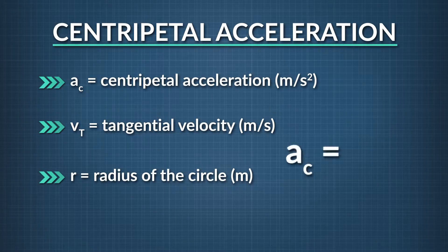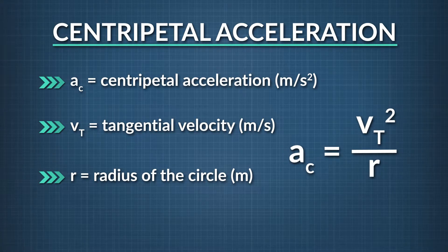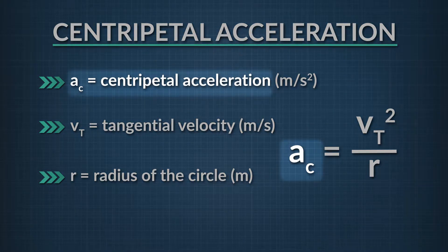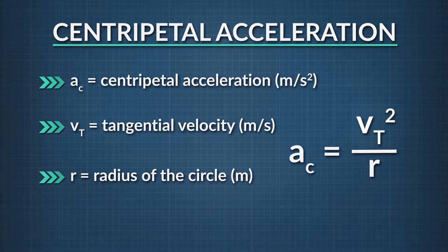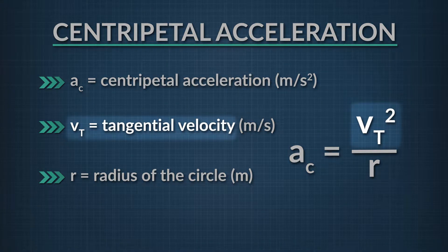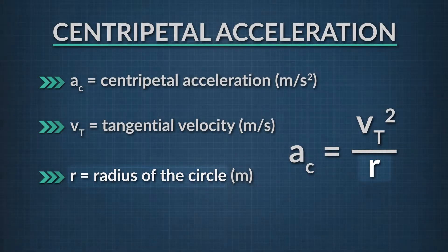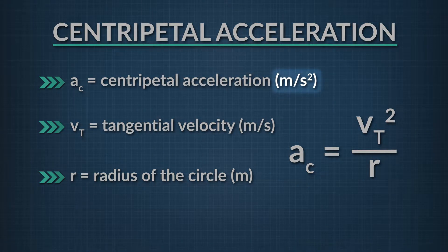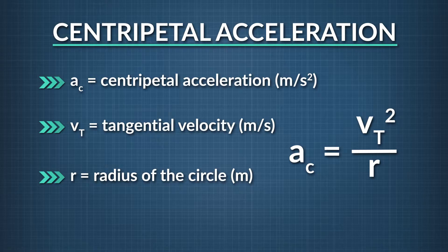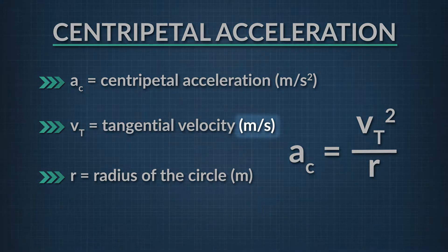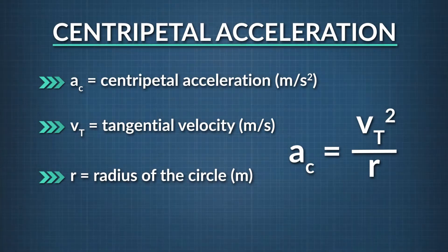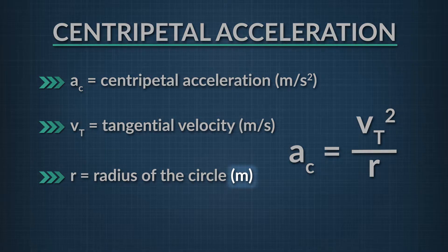Here's the equation for calculating centripetal acceleration: a sub c equals v sub t squared divided by the radius, where centripetal acceleration is in meters per second squared, tangential velocity is in meters per second, and the radius is in meters.